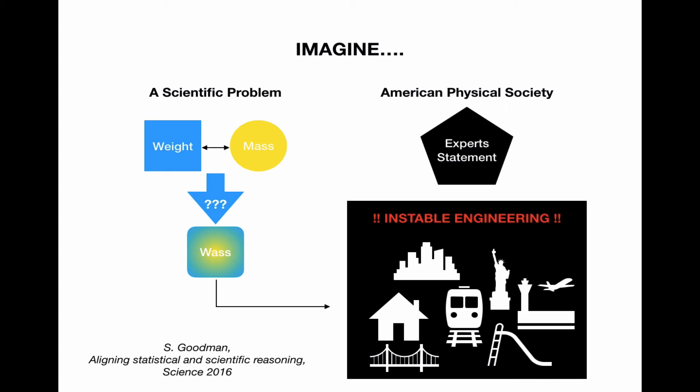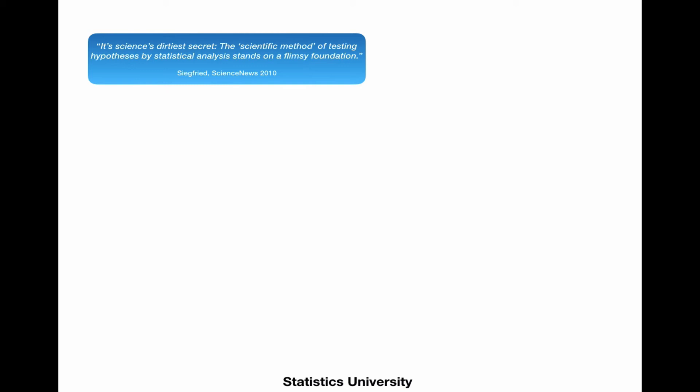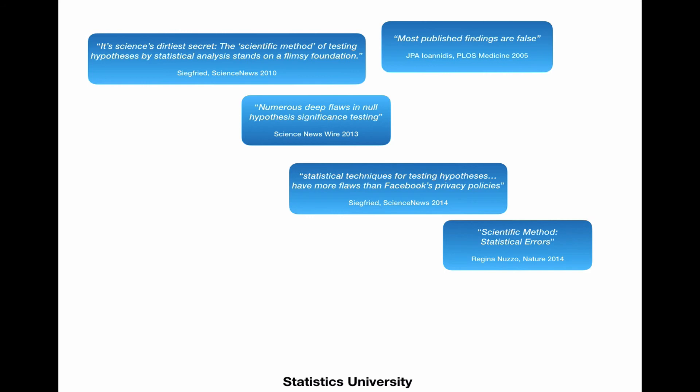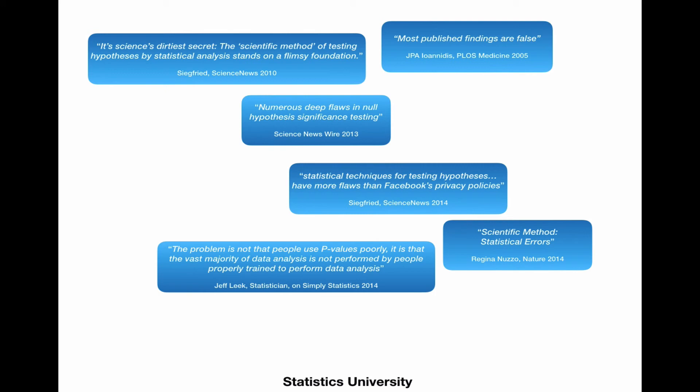There's a lot of papers published on this problem. For example, here in Science News, they warn about its science's dirtiest secret, the scientific method of testing a hypothesis by statistical analysis stands on a flimsy foundation. Most published findings are false. Numerous deep flaws in null hypothesis significance testing. Statistical techniques for testing hypotheses have more flaws than Facebook's privacy policies. I like that one. And the title of a very good nature paper, Scientific Method, Statistical Errors. The problem is not that people use p-values poorly. It is that the vast majority of data analysis is not performed by people properly trained to perform data analysis. And the credibility of many scientific claims is being questioned. Reproducibility crisis.